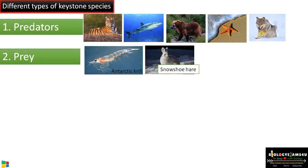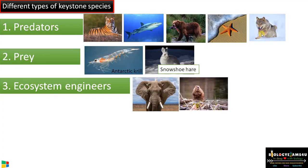Prey populations can also be keystone species — like Antarctic krill, which is food for giants like blue whales and dolphins, and snowshoe hare, whose population is very important in maintaining that ecosystem. There are also ecosystem engineers like the African elephant and beaver, which actively maintain their ecosystems.